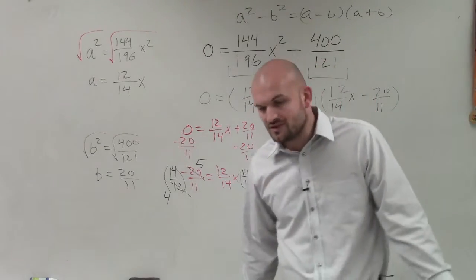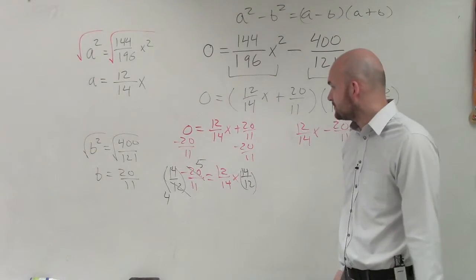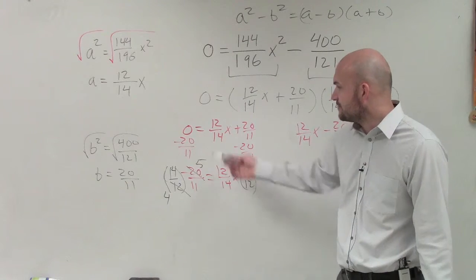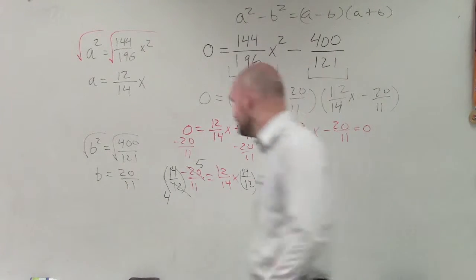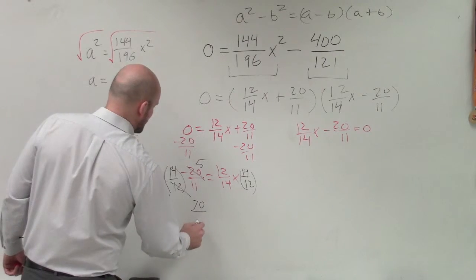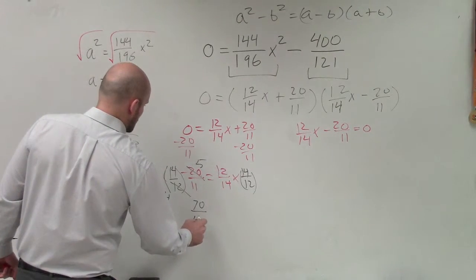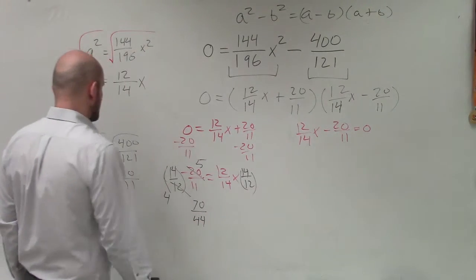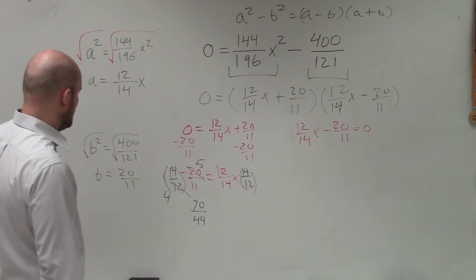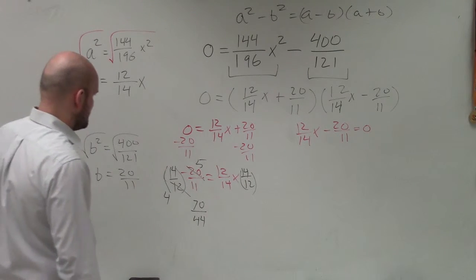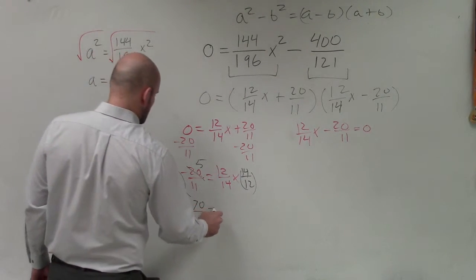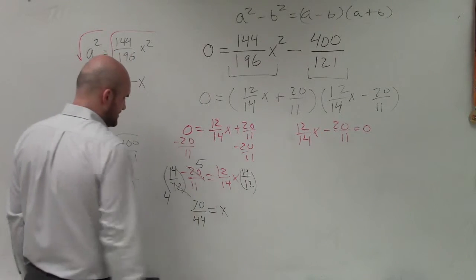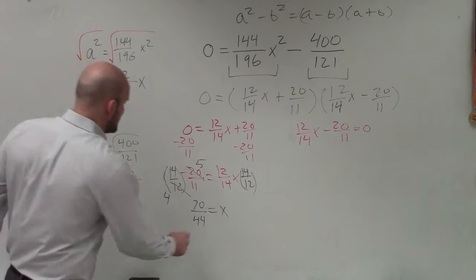Now, I can just multiply across. So I have 14 times 5. Well, 4 times 5 is going to be 56. So therefore, this would be 60, 70. So therefore, I have 70 over 44, which now that seems I can still go ahead and simplify that. That's equal to x. And then I can reduce that again, which would be 35 over 2.